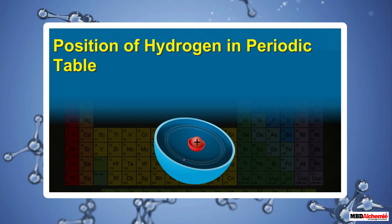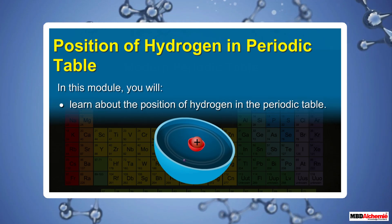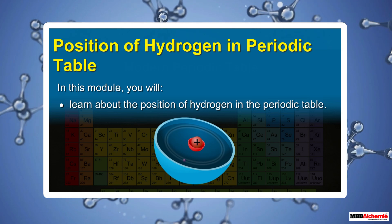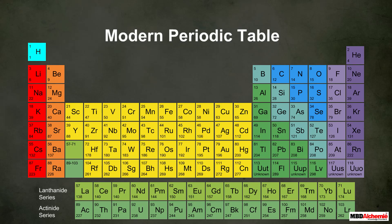In this module, you will learn about the position of hydrogen in the periodic table. You must be familiar with the modern periodic table shown here. As you can notice, hydrogen is not placed in any of the groups; rather, it has been given a separate position. In order to understand the reason behind its separate positioning, we need to study hydrogen in detail.